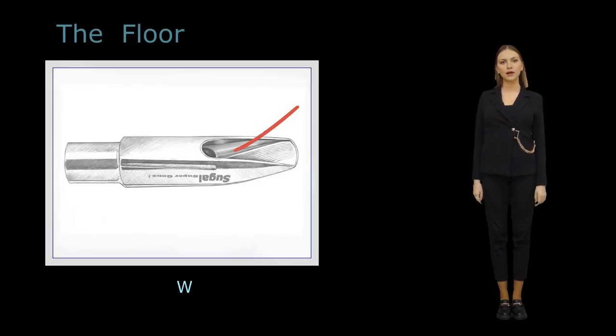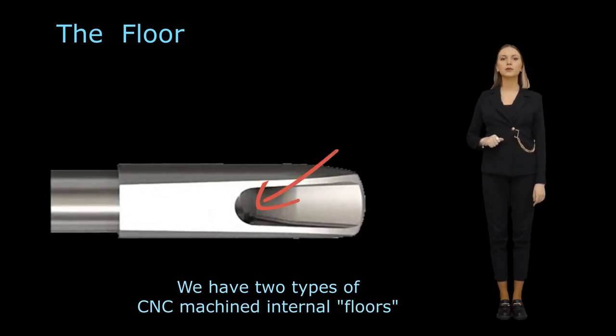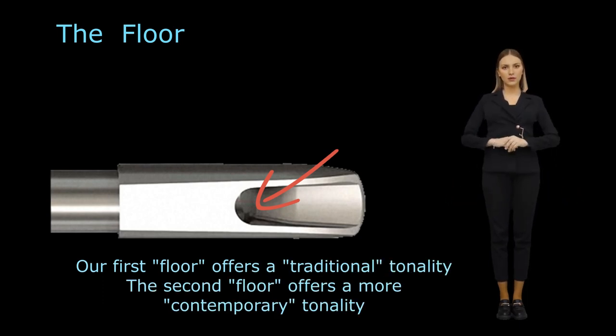The floor is the inner section of the mouthpiece, located behind the baffle and inside the chamber. The height of this section determines the mouthpiece's overall projection. A higher floor, sometimes referred to as the baffle, will give the player a bright projecting sound, while a lower floor usually results in a darker tone.